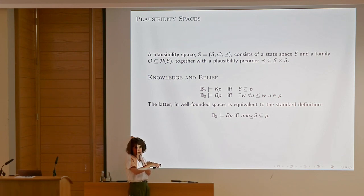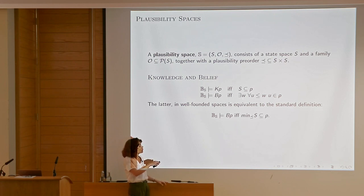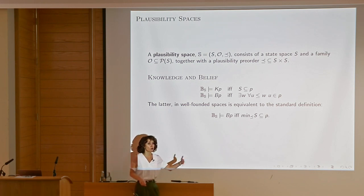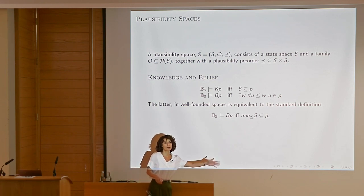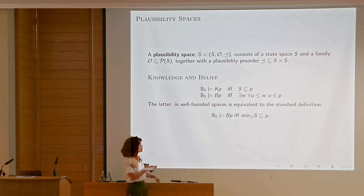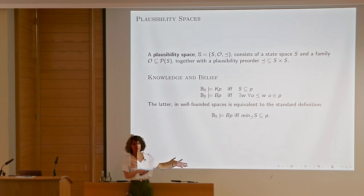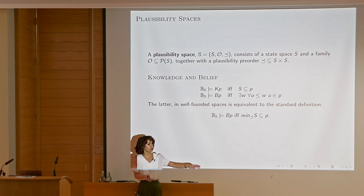This is a very standard way of modeling belief in logic — looking at this combination of two factors. Sometimes, if you are a mathematician wanting infinite structures, the minimum might not exist. Those are actually quite crucial elements in this talk. Then we get this limiting condition: there should exist a point after which whatever is more plausible satisfies P — an infinite tail where P is true everywhere.